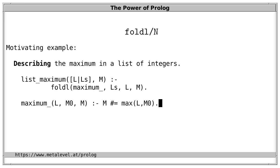we now need to describe the relation for the list element under consideration, then the state up to here, let's call it m0, and the next state m. And in our case, the next state is the maximum of L and m0. And that's all.